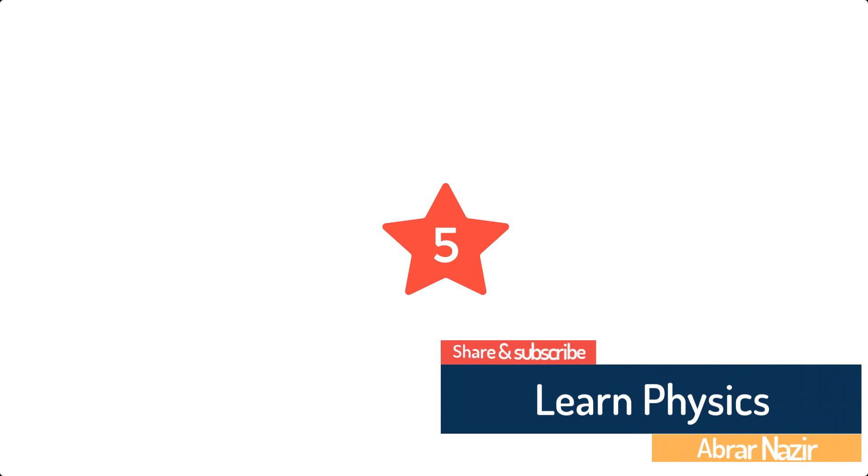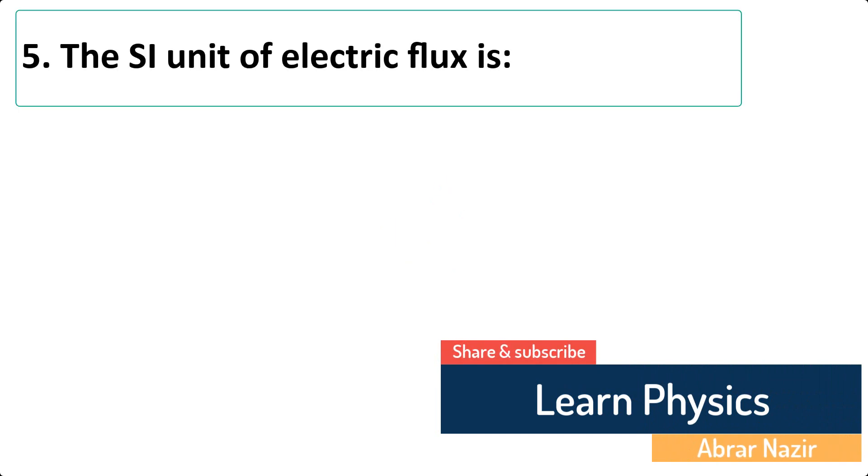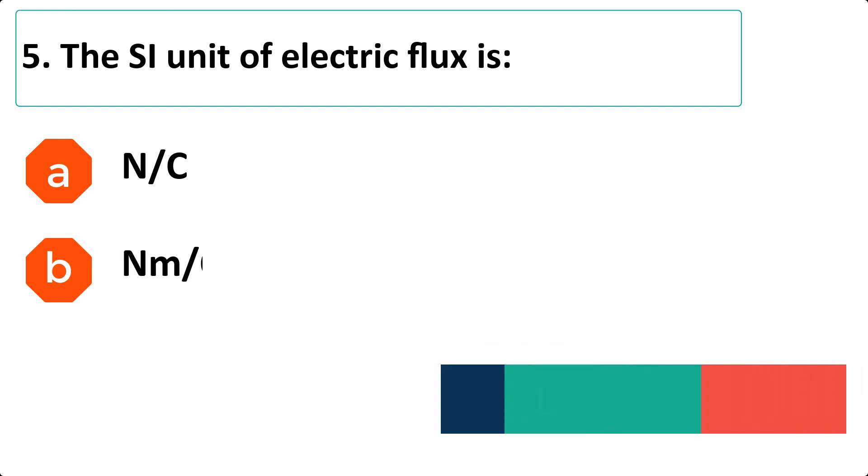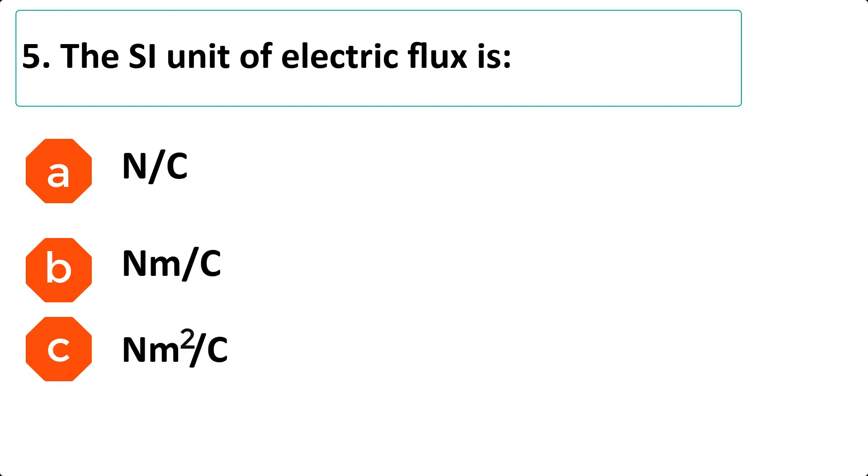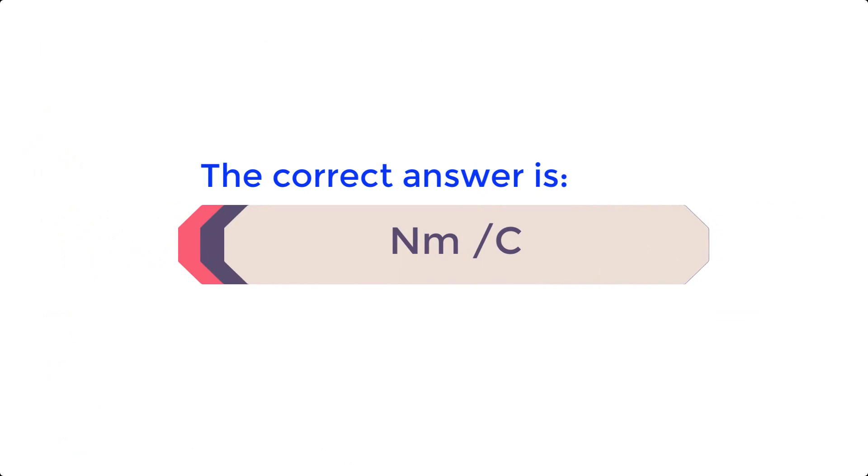A. Newton per coulomb. B. Newton meter per coulomb. C. Newton meter square per coulomb. D. None of these. The correct answer is C. Newton meter square per coulomb.